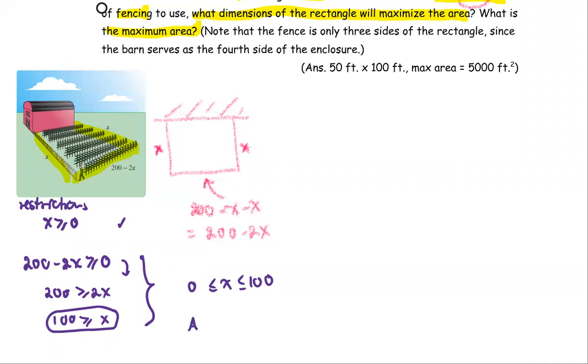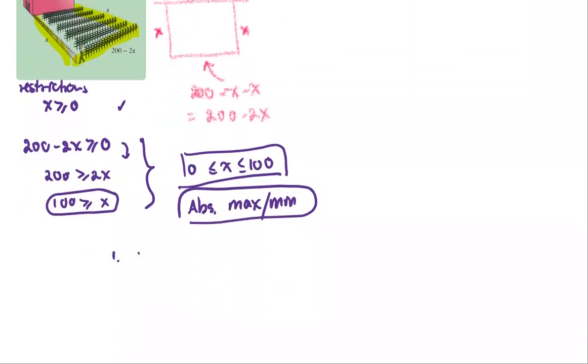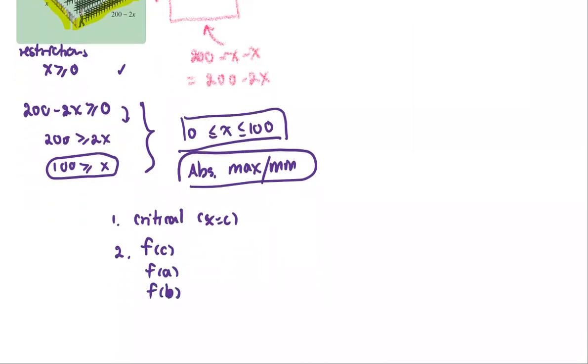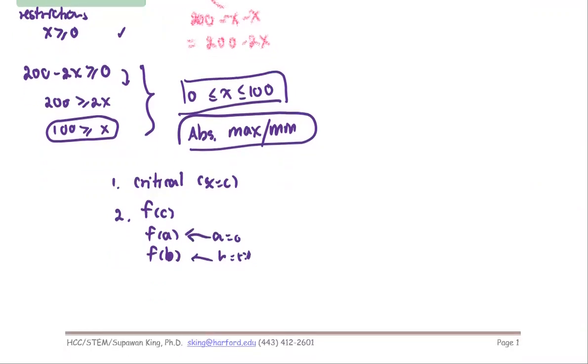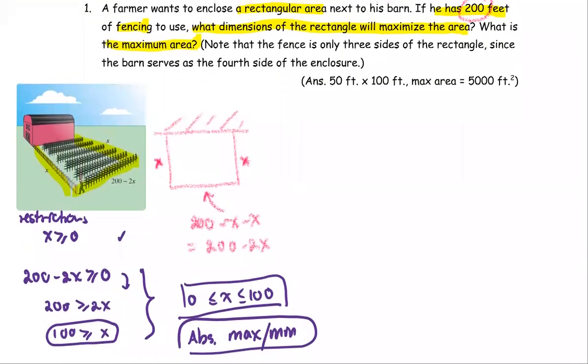That means we are working on a problem involving absolute maximum and minimum when a closed interval is provided. The procedure for this is: Number one, you find a critical point or the critical value at X equals C. Then number two, you compute the function value at the critical point, function value at point A, and function value at point B. In this case, point A is zero and B is 100 because that's the left end and the right end of the interval. And then part number three or the last step, you're going to compare and find which one has the largest quantity, the largest value of the function from step two.